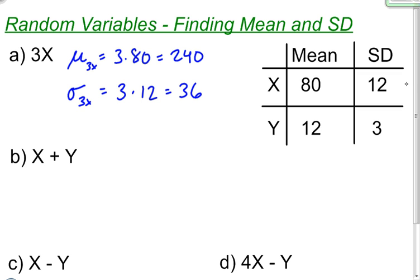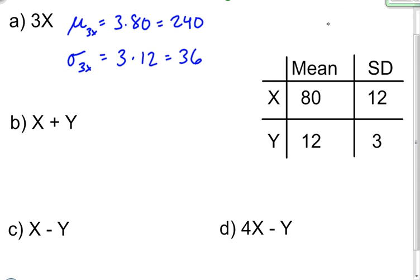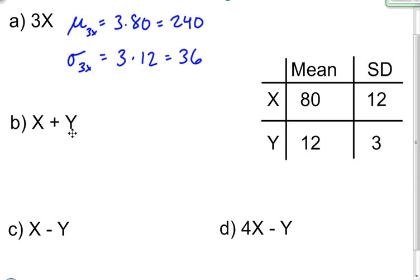Now what happens if instead of multiplying by a constant, we add the two random variables together? In this case I want to find the mean of the sum of random variables x and y. Well the mean of the sum of two random variables is equal to the sum of the means, so in this case it would be 80 plus 12, which is 92.